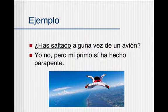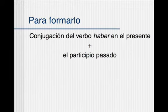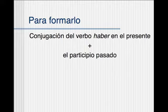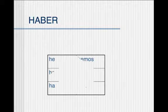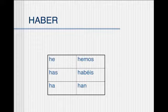You may notice that this kind of verb has two parts, and I'm going to show you how to form this. First we're going to conjugate the verb haber in el presente, and then the second part is the participio pasado — the past participle of the verb. Haber is conjugated with these forms: he, has, ha, hemos, habéis, han.